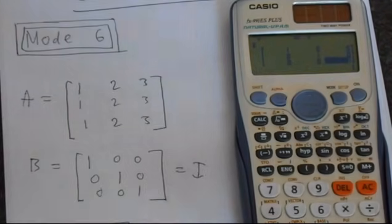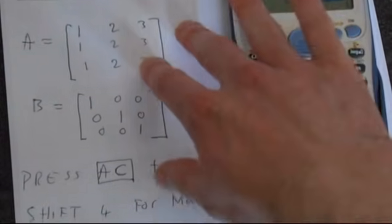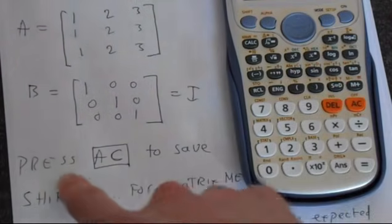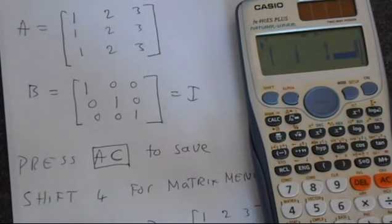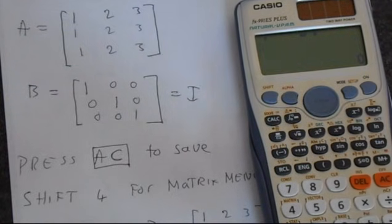Now that we've entered our two matrices, we need to save these. And to do that, you press the AC button. Let's move the calculator down a bit. So the AC button is where the off button is. So that's AC.